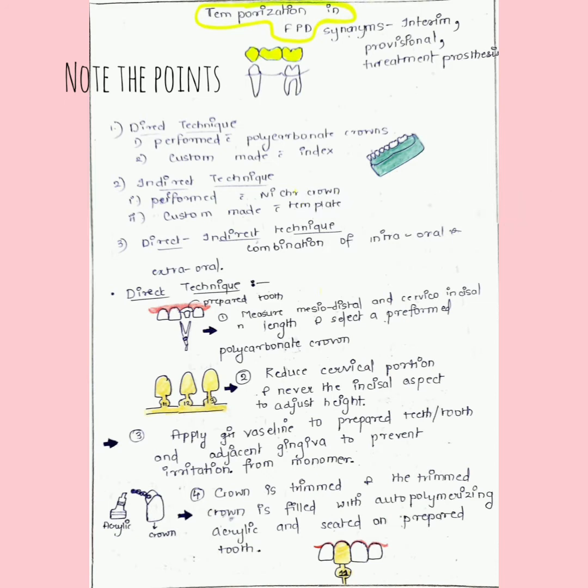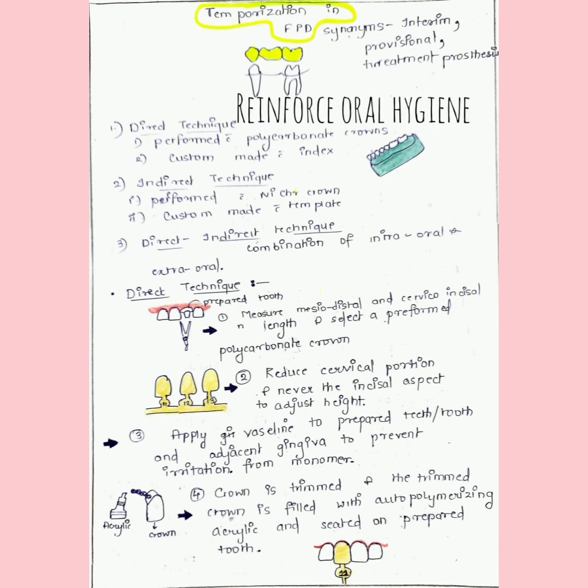We want to provide comfort and function, evaluate parallelism of the abutment, prevent migration of teeth. Even though there is a missing tooth, mesial drifting of teeth takes place. Also to improve aesthetics, prevent supra-eruption of teeth. Whenever a tooth is missing in a particular arch, there will be supra-eruption of teeth in the opposing arch—that's the mechanism we call dental alveolar compensation.